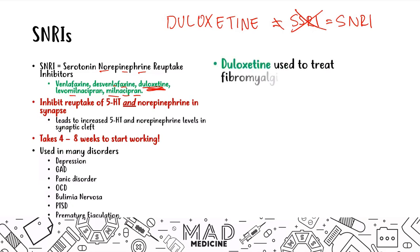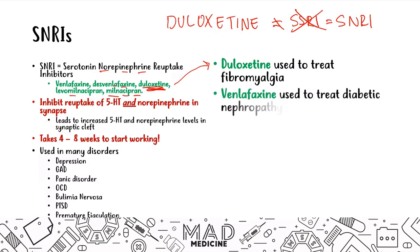The specific things you need to know beyond the shared indications: duloxetine — the one SNRI that sounds like an SSRI — is used to treat fibromyalgia, and venlafaxine is used to treat diabetic neuropathy. These two drugs have uses beyond psychiatric diseases.